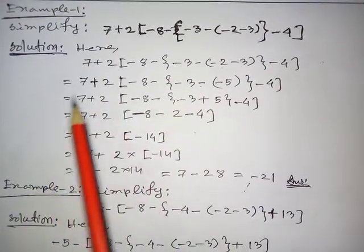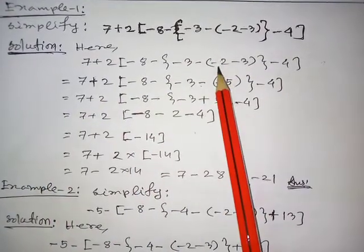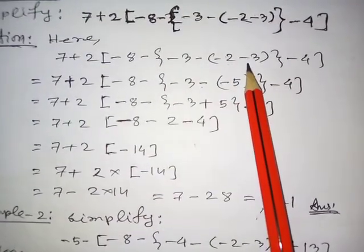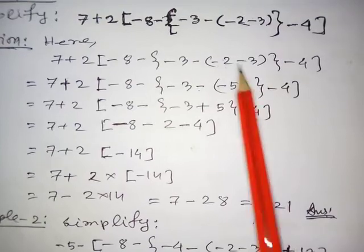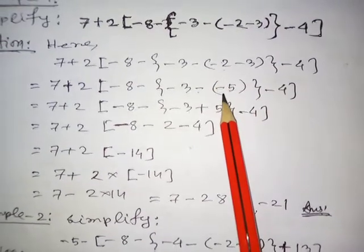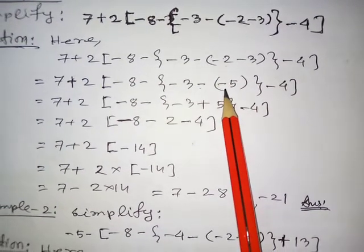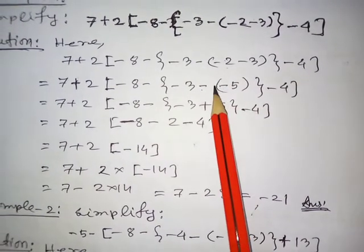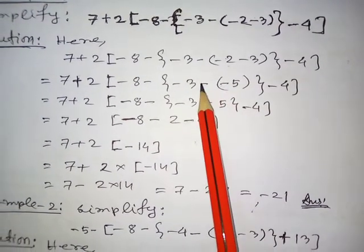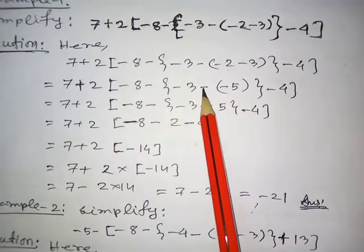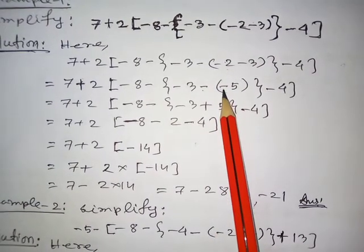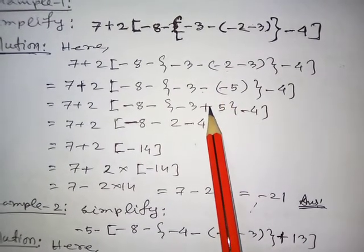Inside the first bracket: minus 2 minus 3. These are the same sign, so we add them — that gives minus five. Now there is a minus sign before this bracket, so minus times minus equals plus.